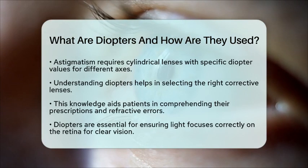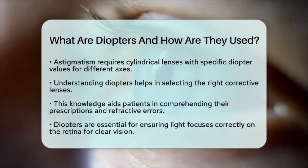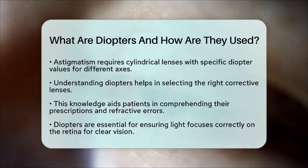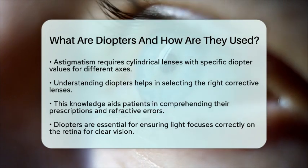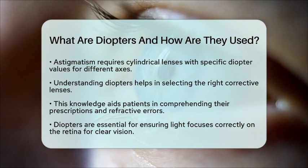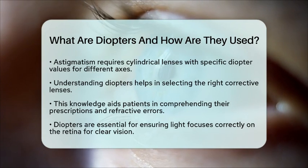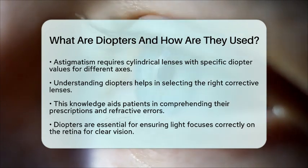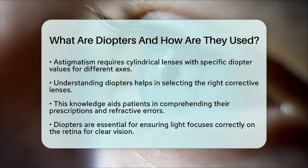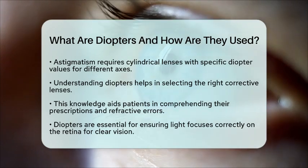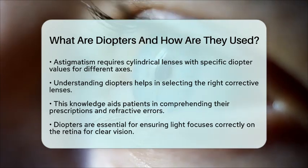Understanding diopters is essential for selecting the right corrective lenses, whether they are glasses or contact lenses. It enables optometrists to tailor vision correction precisely, ensuring light focuses correctly on the retina. This understanding also helps patients grasp their prescriptions and the degree of their refractive errors. So the next time you get your eyes checked, remember that diopters play a vital role in helping you see clearly. They are not just numbers on a prescription but a key part of your eye health journey.